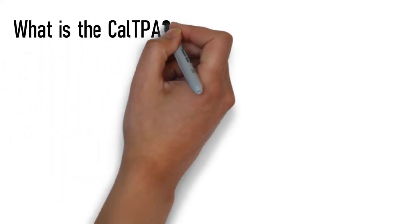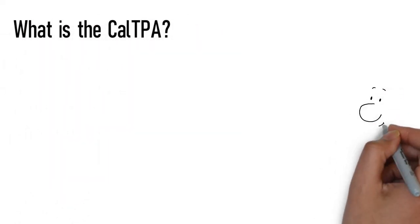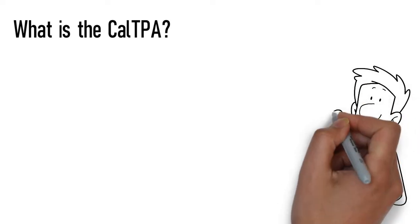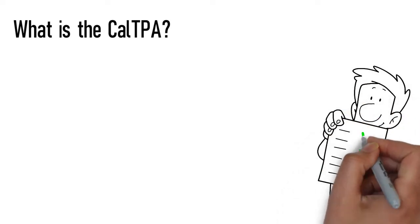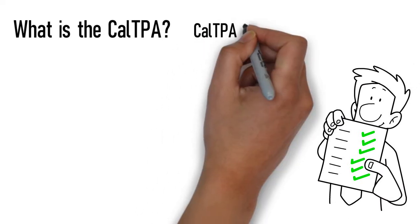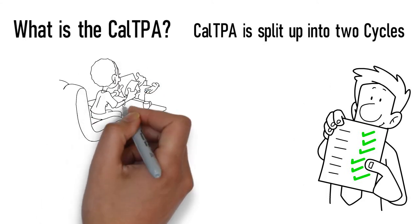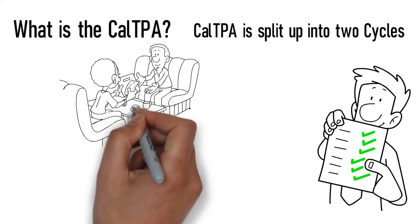What is the CalTPA? CalTPA is an approved summative assessment for multiple and single subject credential programs in California. CalTPA is split up into two cycles, which can be submitted separately. Both must be passed.